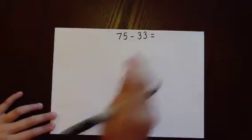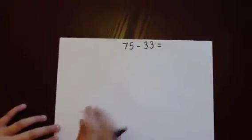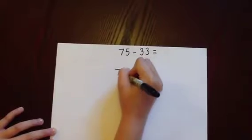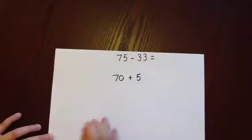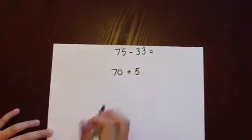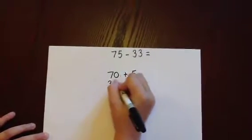75 subtract 33 will be partitioned. 75 becomes 70 add 5. And then underneath in columns 33 becomes 30 add 3.